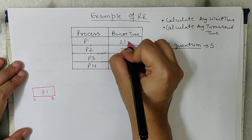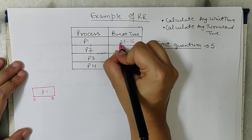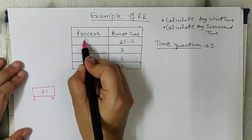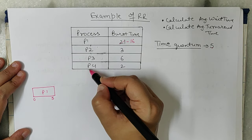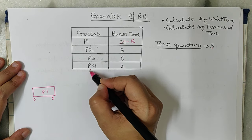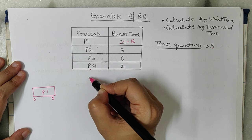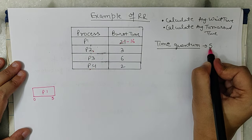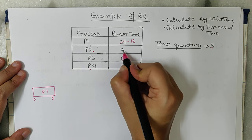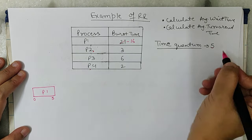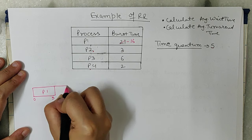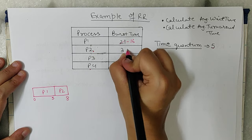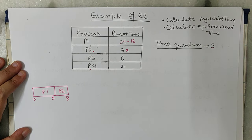After using the CPU for 5 minutes, P1's remaining time becomes 16. P1 will now stand at the back of the queue. Now P2 will get 5 minutes, but its burst time is only 3 minutes, so it leaves the CPU after 3 minutes. So 5 plus 3 equals 8, and P2 is finished — P2 is no longer standing in the ready queue.